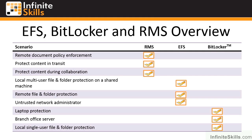To leverage RMS, the application has to support RMS. For example, RMS works with Office and SharePoint — applications like Word, Excel, and PowerPoint can understand RMS and adhere to those rights. You can't protect any type of data with RMS; the application that uses the data has to enforce those rights. Whereas Encrypted File System just encrypts the data and works with any type of data.